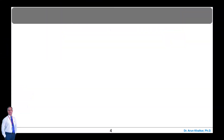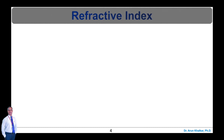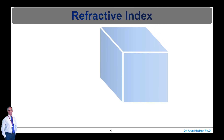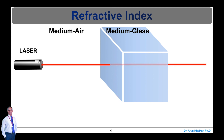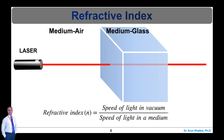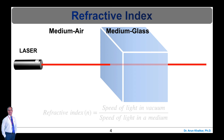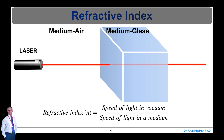Let's learn the fundamental concept of light to understand the Optic Fibre. The speed of light changes when it passes through a medium, and this change in speed is expressed by refractive index. This variation in the refractive index leads to another interesting phenomenon, that is refraction. If laser light passes through a glass medium from air, there is a change in its speed. The refractive index n is equal to the speed of light in vacuum divided by the speed of light in a medium.